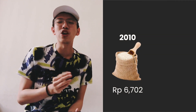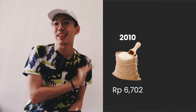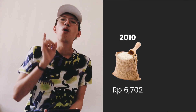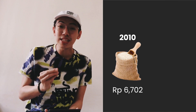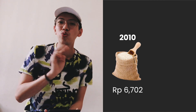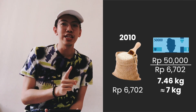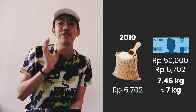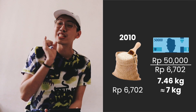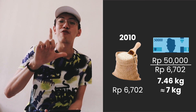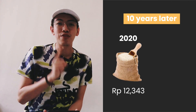Do you ever imagine what was the price of a kilogram of rice in 2010, which was 10 years ago? Based on central bureau of statistics data, one kilogram of rice in 2010 was 6,702 rupiah. So with 50,000 rupiah you can purchase 50,000 divided by 6,702 rupiah, which equals 7.46 kilograms — rounding down, about seven kilograms.